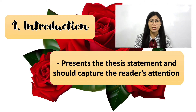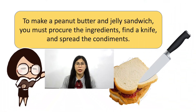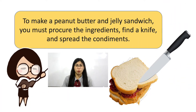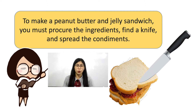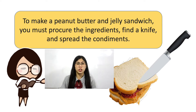Let's have an example. This is an informative thesis statement: 'To make a peanut butter and jelly sandwich, you must procure the ingredients, find a knife, and spread the condiments.' This thesis statement showed the reader the topic — a type of sandwich — and the direction the essay will take, describing how the sandwich is made.